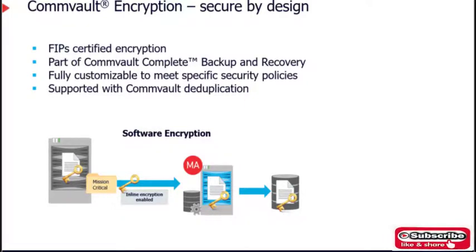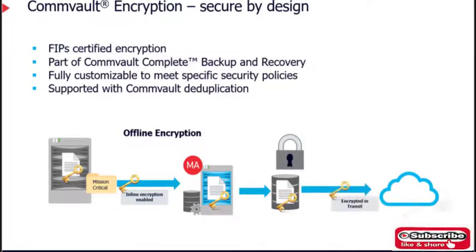Data can remain encrypted when written to the storage target. Offline or copy-based encryption uses Commvault software encryption to secure data during auxiliary copy jobs. Customers can preserve the primary copy encryption or choose to re-encrypt the data with a different encryption algorithm or different encryption technique.